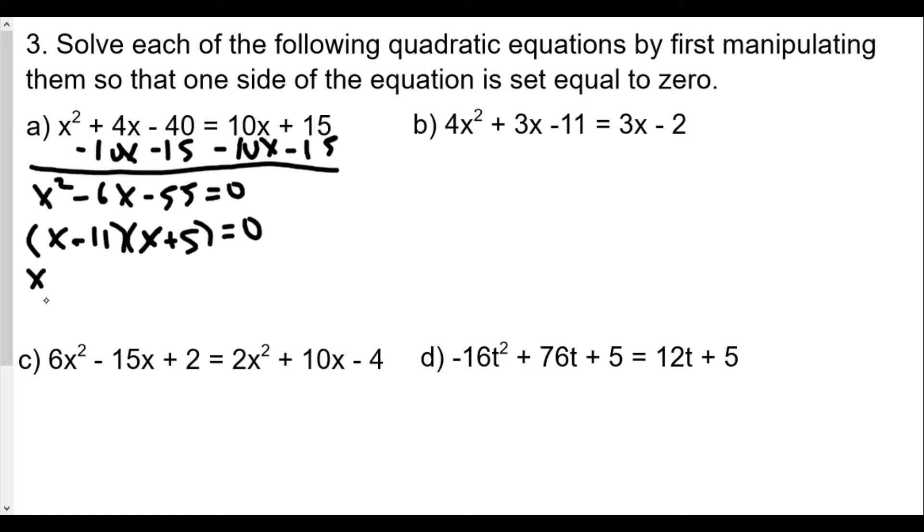We have x - 11 = 0 and x + 5 = 0. Add 11 to both sides, x = 11. Subtract 5 on both sides, x = -5. So x equals 11 and x equals negative 5. I'll box that answer because my handwriting is dreadful and I don't have a stylus.